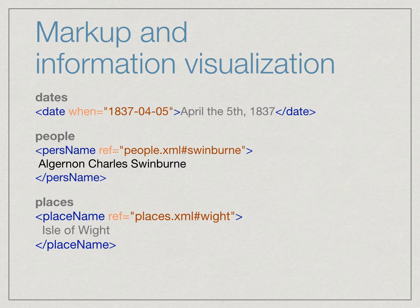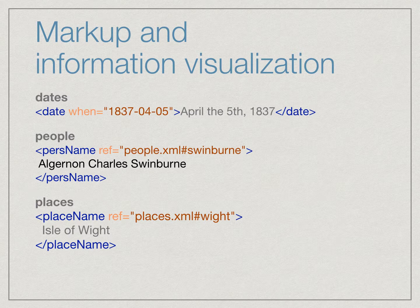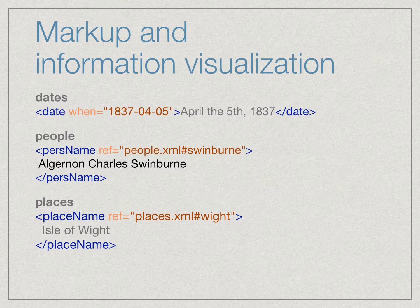In the second example, people, we've identified the name Algernon Charles Swinburne as a personal name. The ref attribute points to an external XML file or database where we have an entry for Swinburne from which we may pull additional information such as birth or death dates. Similarly, in the places example, we have the Isle of Wight, an island off the coast of southern England. It's identified as a place name, and again the ref attribute refers us to an external XML file and an ID where we can pull additional information such as alternative names for this place, geographic coordinates, and so on.